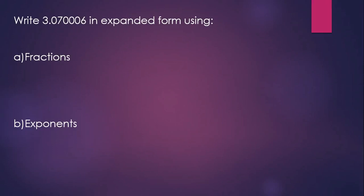Write this number in expanded form using fractions and using exponents. Expanded form recognizes the place value of the digits in the number. So 3 is in the units or ones place, 7 is in the hundredths place, and 6 is in the millionths place. So using fractions, we can write 3 plus 7 hundredths plus 6 millionths.